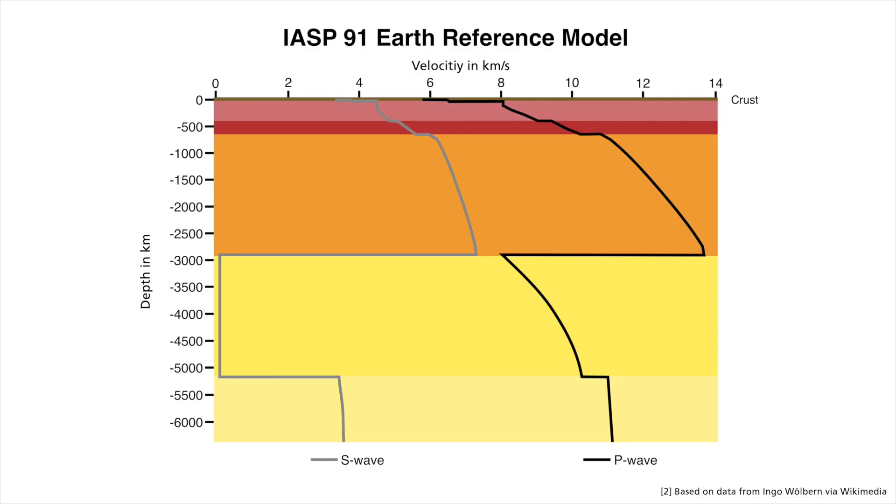In the earth's crust, the P-wave velocity is between 5.8 and 6.5 kilometers per second, and that of S-waves below 4 kilometers per second.